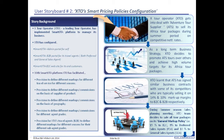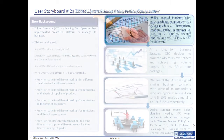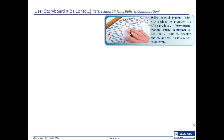XTO learns that ATS has multiple business contracts with different competitors who are typically selling ATS packages at 14% to B2C and at 10% to B2B. During its summer season sales planning meeting, XTO configures a general markup policy which defines the markup it will be offering to its B2C customers and its preferred as well as general sales agents. However, to meet the target volume for ATS products, XTO configures a separate promotional markup policy which provides lesser markup as well as discounts for its B2C customers and preferred sales agents.